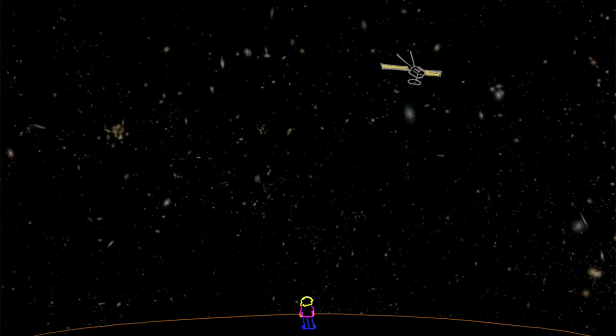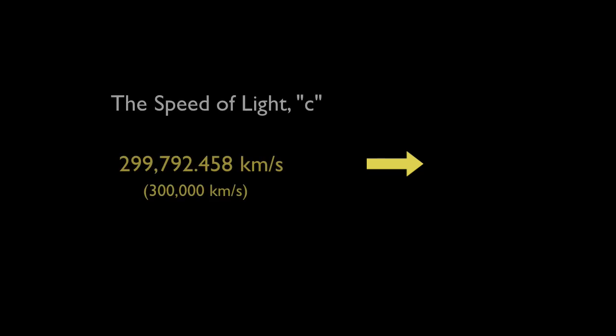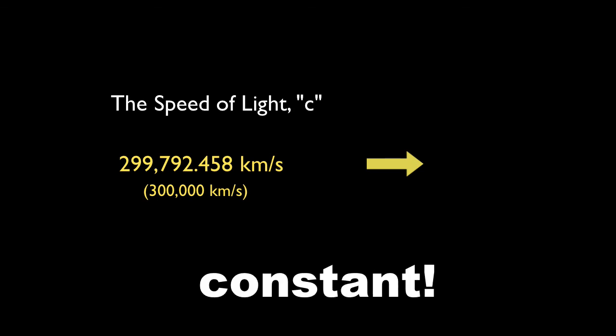Of course, I'm talking about the speed of light in a vacuum, which means empty space. Through the vacuum of space, light travels unimpeded at a constant speed of about 300,000 kilometers per second, no matter what your frame of reference. See? Yeah, see.